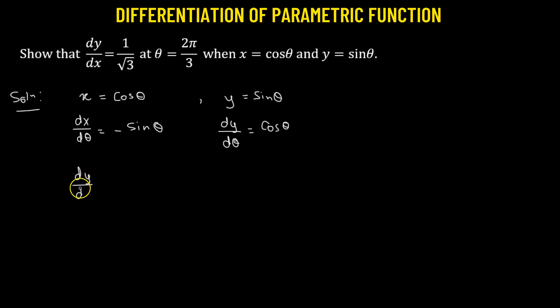Now to find the derivative of y with respect to x, all we have to do is take derivative of y with respect to theta and divide it by derivative of x with respect to theta. So this is going to give us cosine of theta divided by negative sine theta, and this ratio is simply the negative cotangent of theta.